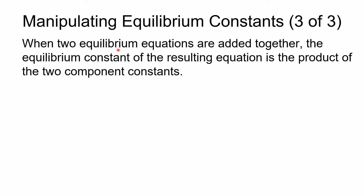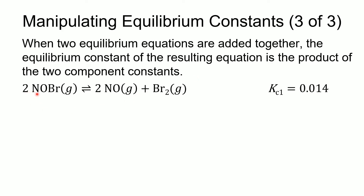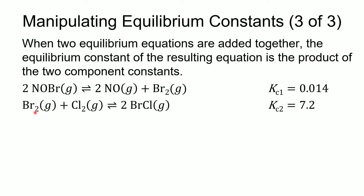If we add two equilibrium equations together, the equilibrium constant of the resulting equation is the product of the two component constants. Here is an example. We've got 2NOBr in equilibrium with 2NO and Br2, with Kc1 = 0.014. The second equation is Br2 plus Cl2 in equilibrium with 2BrCl, with an equilibrium constant of 7.2.